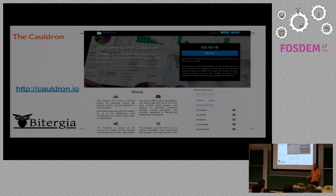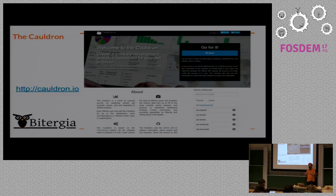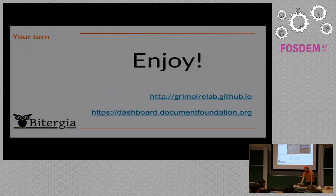If you want to try something similar with the same software on arbitrary GitHub repositories, you can use Cauldron.io. It uses the same software as the Document Foundation dashboard, but for free you can analyze any GitHub organization you want. You just connect your GitHub account because the GitHub API uses a token, and you get a complete dashboard for that project. This is the link to the software, and this is the link to your dashboard.